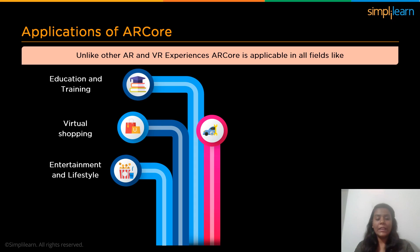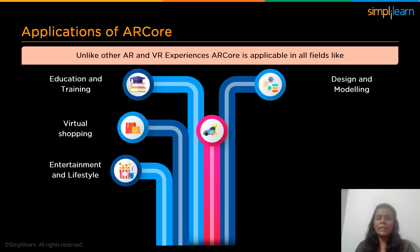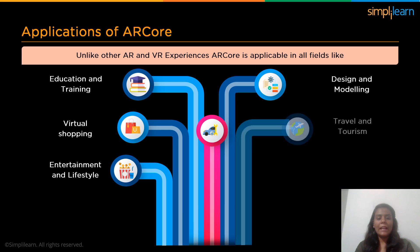Next we have education and training. In recent days, online education and online training are quite popular due to the key factors of accessibility, which eliminates the need for essential resources. Design and modeling is another application — for example, a CAD engineer uses AR to create a model of physical objects as a hologram or 3D model to provide a real-time scenario of simulated objects. Next we have travel and tourism, where AR provides accurate information in terms of distance, location, and available services in a particular destination or geographical area, making travel easier and more convenient.